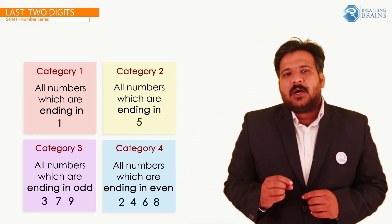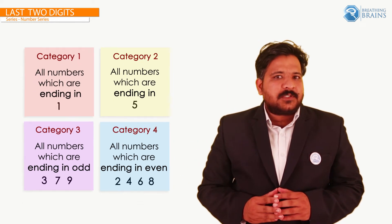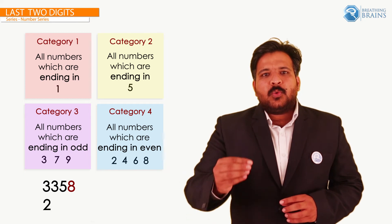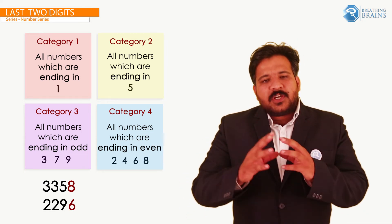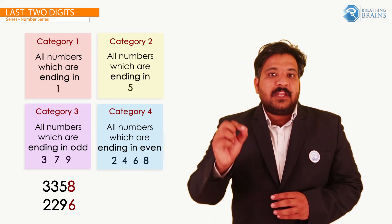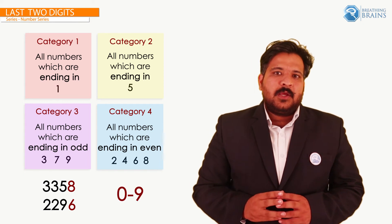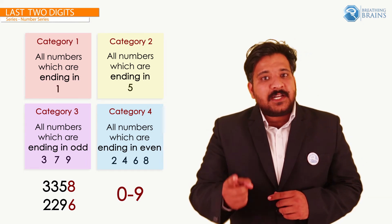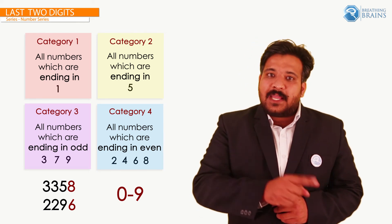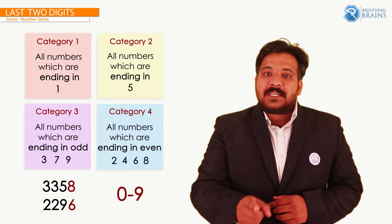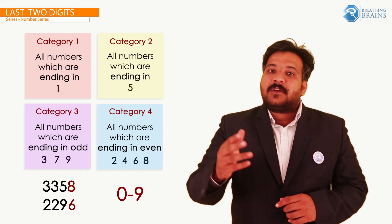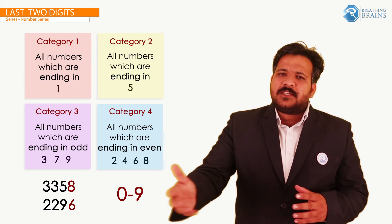I would also like to mention that if you consider any random number in the universe — say 3,335,822,96 — you will observe that all numbers end in a digit which is between 0 to 9. So if you observe all these categories — numbers ending in 1, numbers ending in 5, numbers ending in 3, 7, or 9, and numbers ending in 2, 4, 6, or 8 — I have covered almost all numbers from 1 to 9.